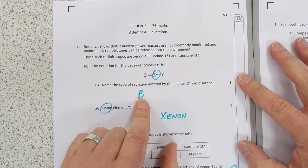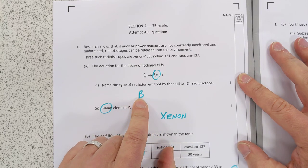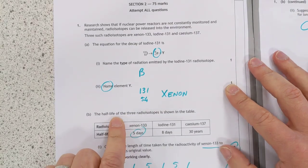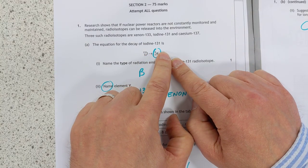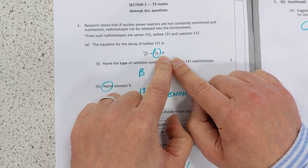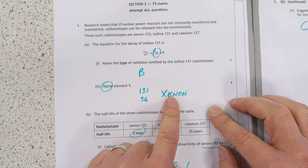That particle there is a beta particle. It does say name, I've just written that. I should have written beta, but I think you'll probably get away with that. Element Y. Well, 131, 0 on this side, that has to be 131. 53 on this side, that has to be 54, because if you add the negative 1 to it, you get 53, which is xenon.